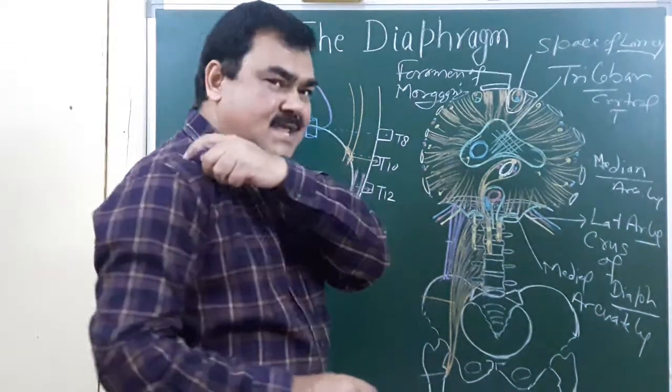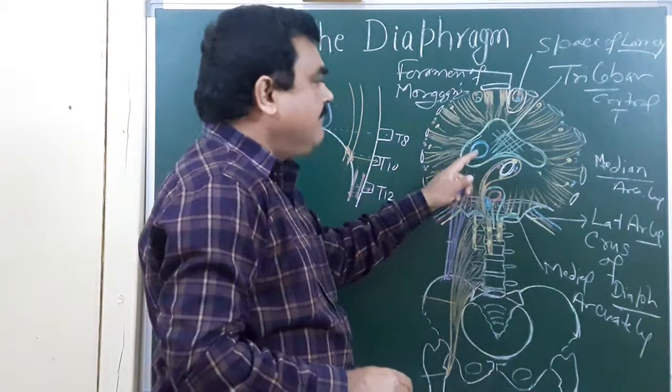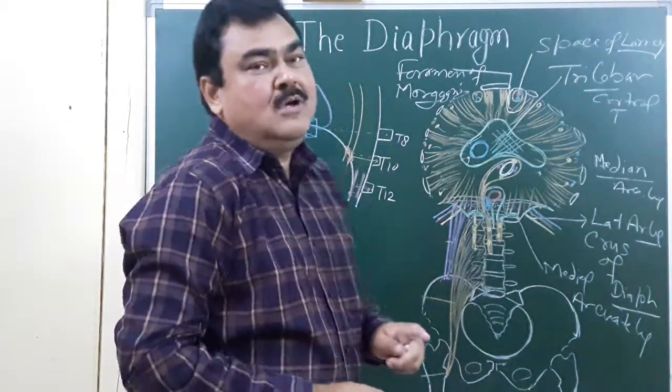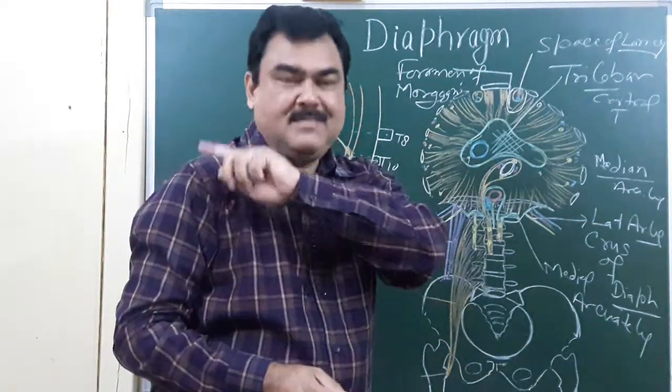Patient feels pain over the right tip of the shoulder due to irritation of the diaphragm. The reason behind this is the same root value of the frenic nerve and supraclavicular nerve which gives supply to this region.